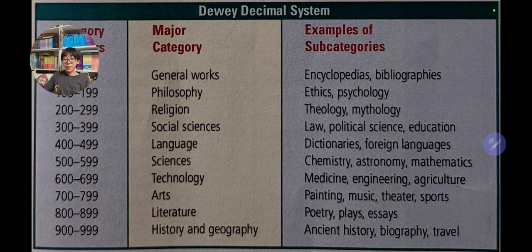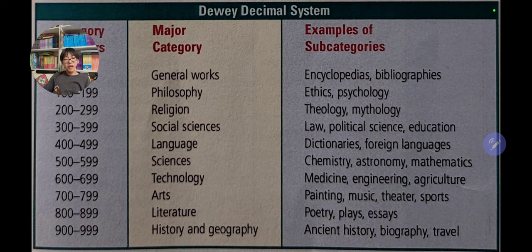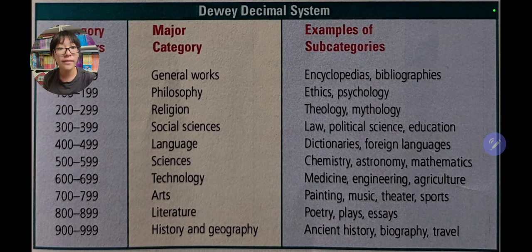From 800 to 899, those numbers represent literature — like poetry, essays, Virgil's Aeneid, Homer's Odyssey and Iliad. And the final numbers, 900 to 999, are about history and geography, which include ancient history, biography, and travel.